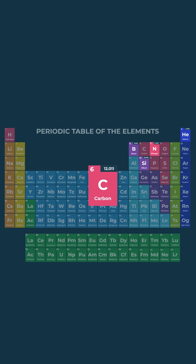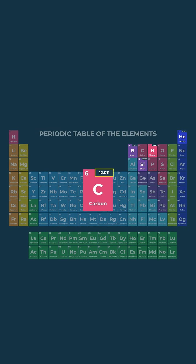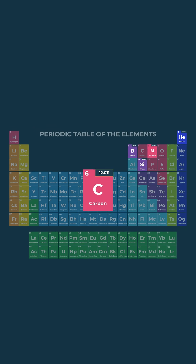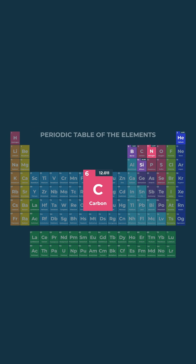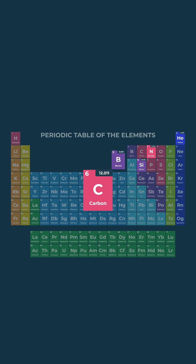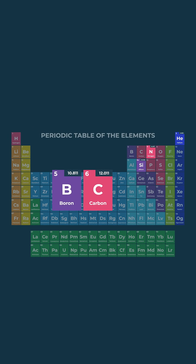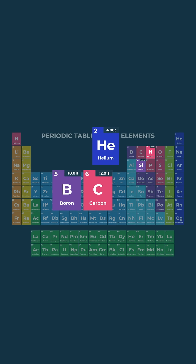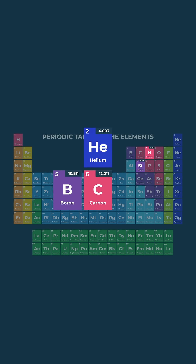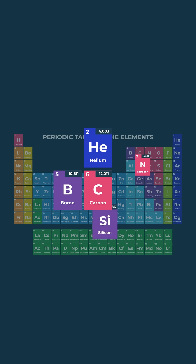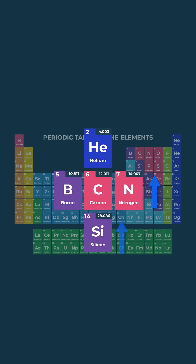Each element has its relative atomic mass written on the periodic table of elements. If we make a comparison, all the elements to the left and above carbon have a lower relative atomic mass value, while the elements to the right and below have a higher value.